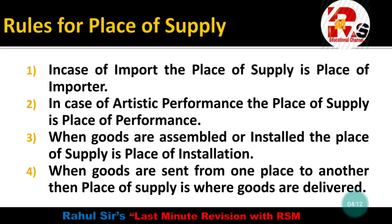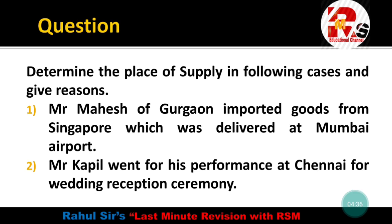These are the basic rules. If you look at last year's paper, questions are made on these rules. Even if you understand the basics of place of supply, you can easily write answers. Every individual point carries two marks — one for identifying the place of supply and one for the reason. Now let's look at the question: Determine the place of supply in the following cases and give reasons.